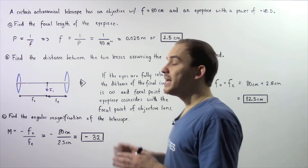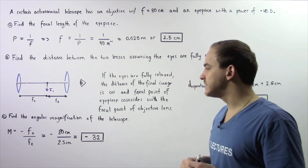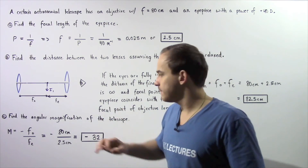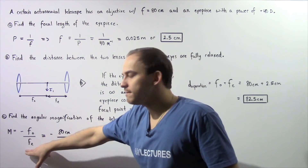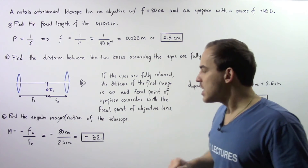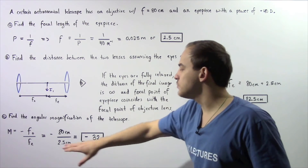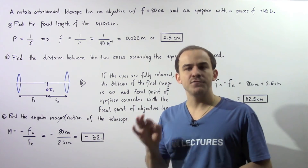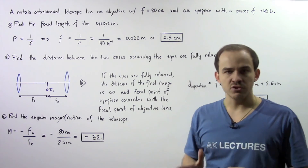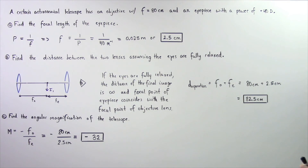Finally, let's move on to part C. We want to find the angular magnification, the magnifying power of our astronomical telescope. Recall that the magnification M is equal to negative the focal length of the objective divided by the focal length of the eyepiece. This negative simply implies our final image is inverted. The objective lens has a focal length of 80 centimeters and the eyepiece has a focal length of 2.5 centimeters, giving us an angular magnification of negative 32.